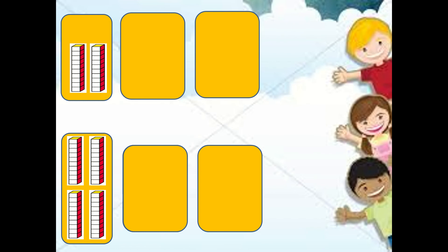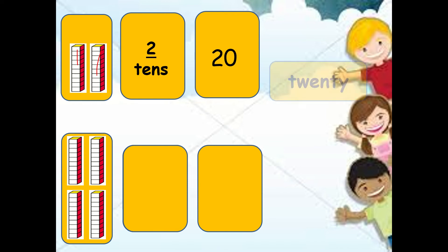Now take a look at these examples. We have here groups of cubes. So to know how many cubes there are, we will count by group or by tens. For example, number one — how many groups are there? Remember, one group is equal to ten. So how many tens are there? Let us count: one, two. We have here two tens, and we will write it as two and zero. That is twenty. Two and zero is twenty.